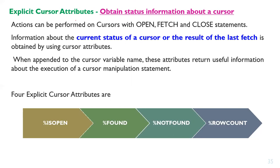The purpose of using cursor attributes is to obtain status information about a cursor. Actions can be performed on cursors using open, fetch, and close statements. Information about the current status of a cursor or the result of the last fetch is obtained using cursor attributes. When appended to the cursor variable name, these attributes return useful information about the execution of a cursor manipulation statement.